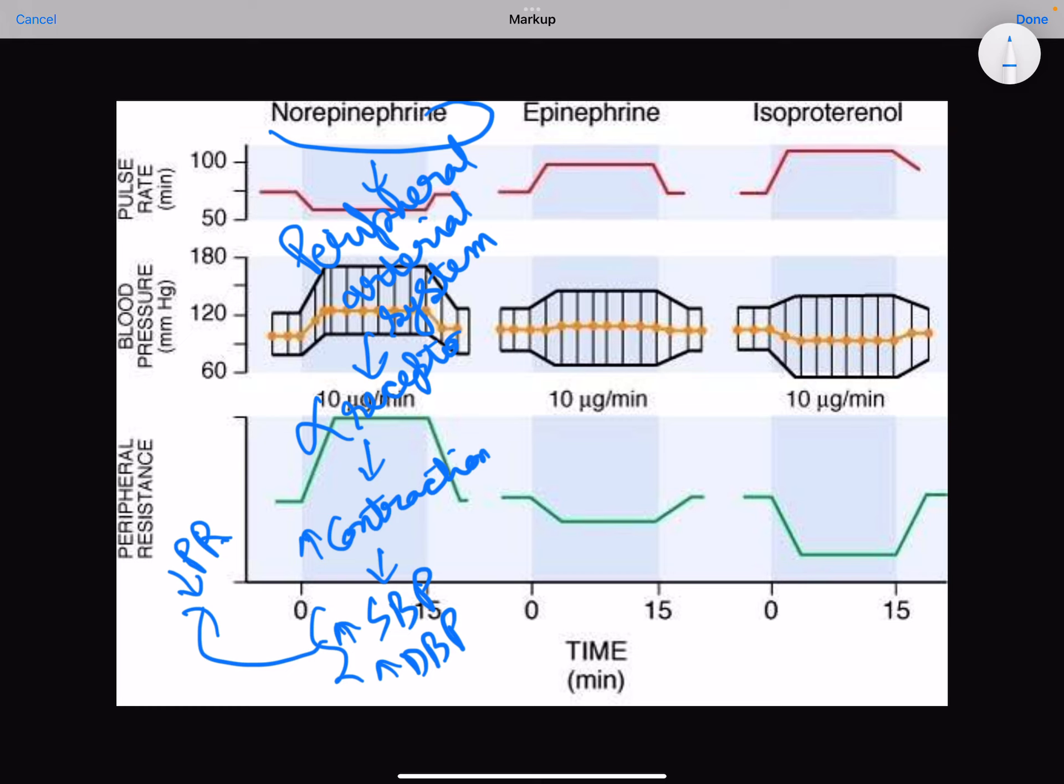But epinephrine is diagrammatically opposite to what is norepinephrine. Now epinephrine also acts on heart, so it increases the heart rate and it increases the systolic blood pressure.